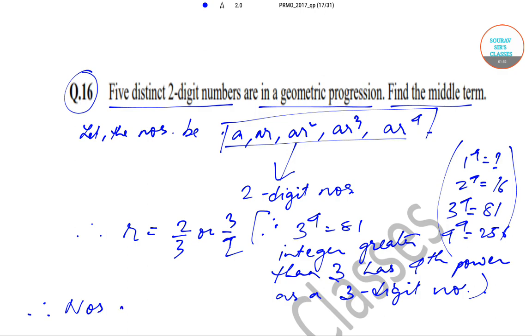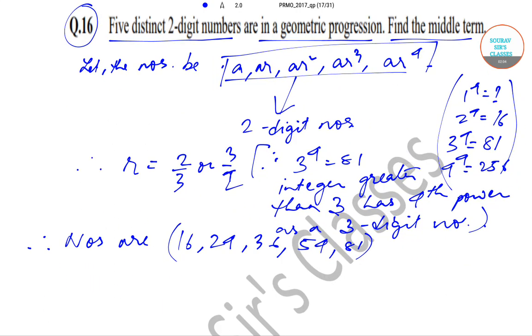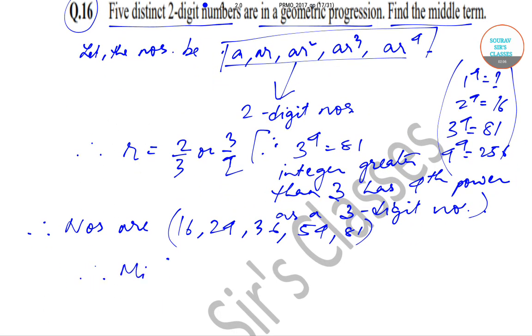In that case, the numbers are 16, 24, 36, 54, and 81. As you can see, the middle term is 36, which is the answer that we are looking for.